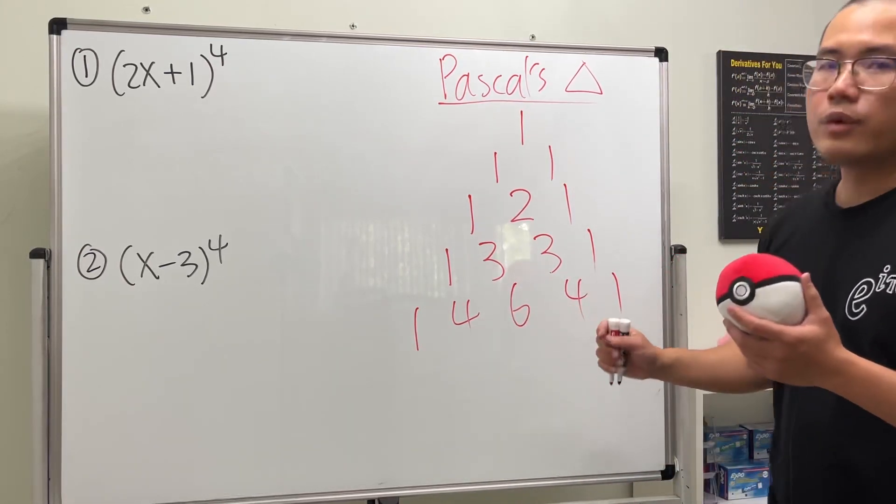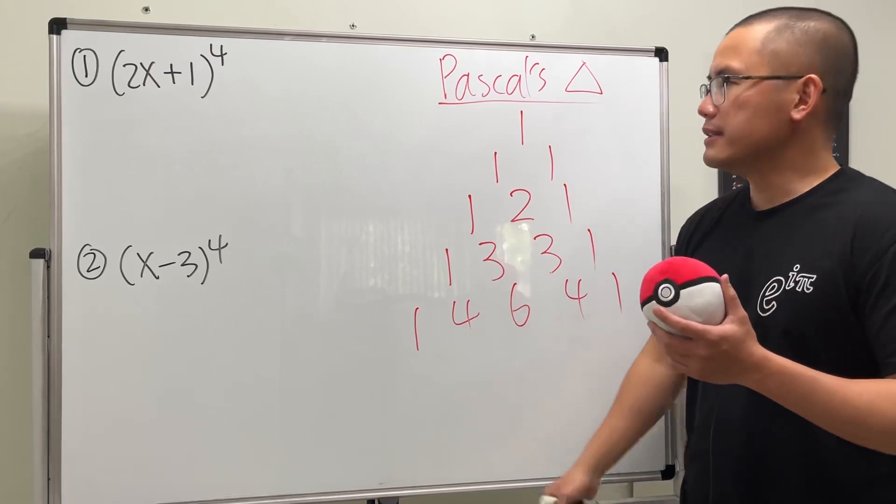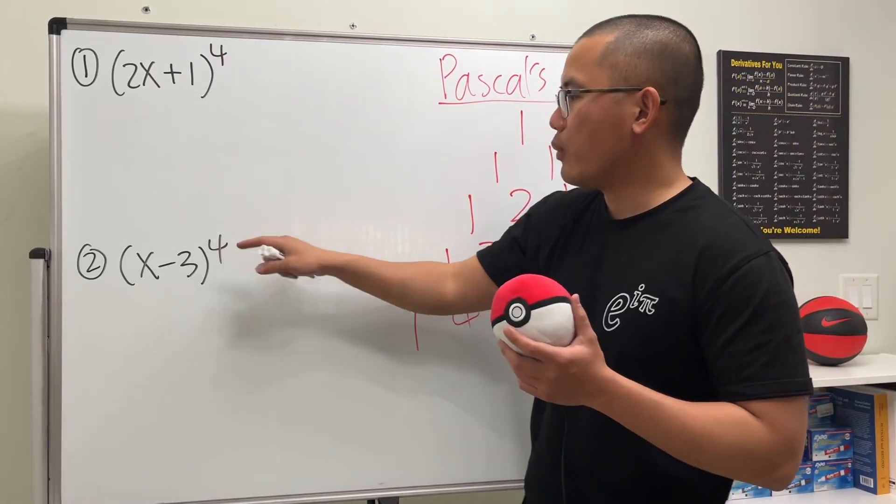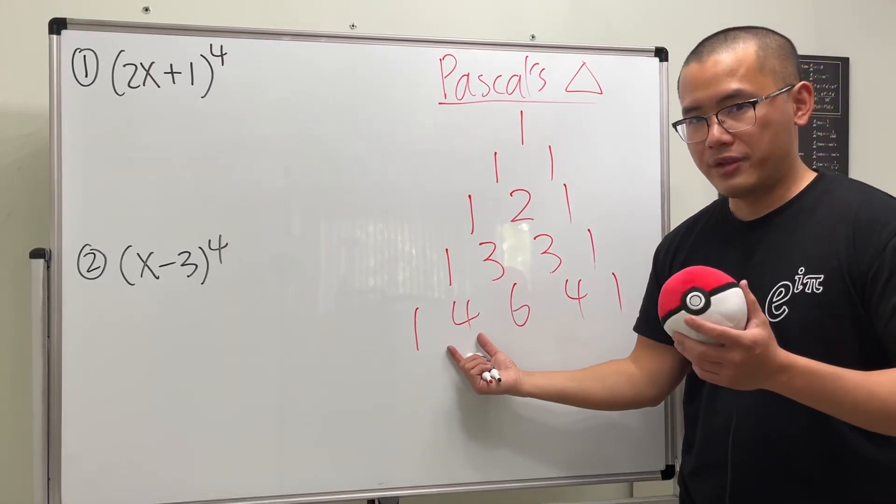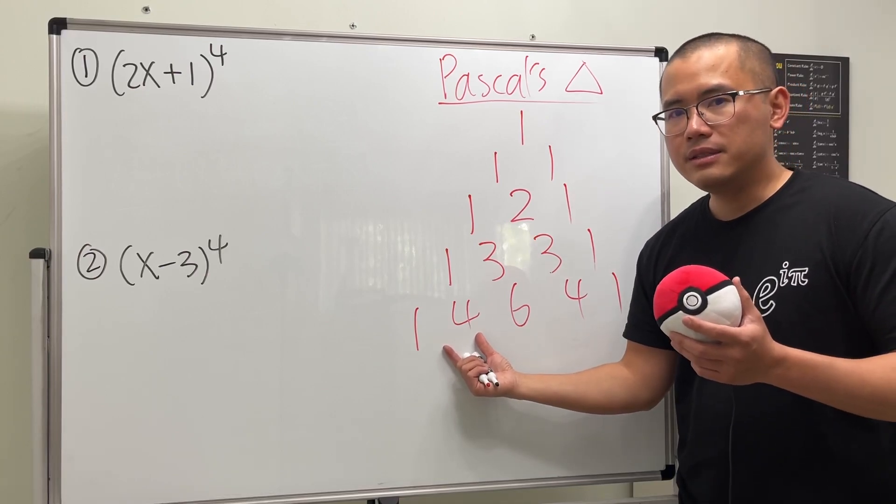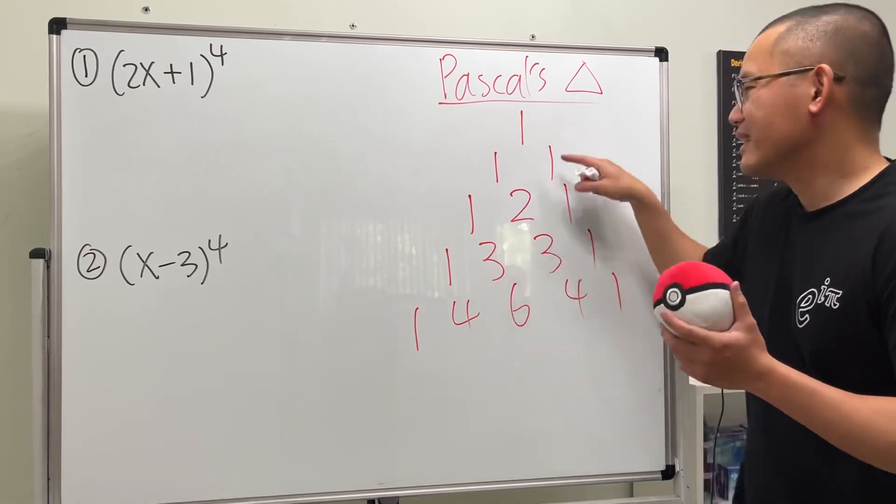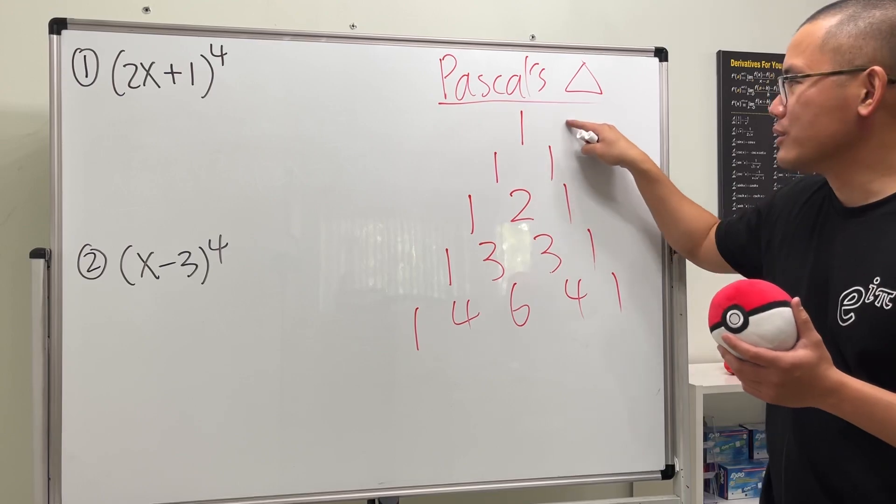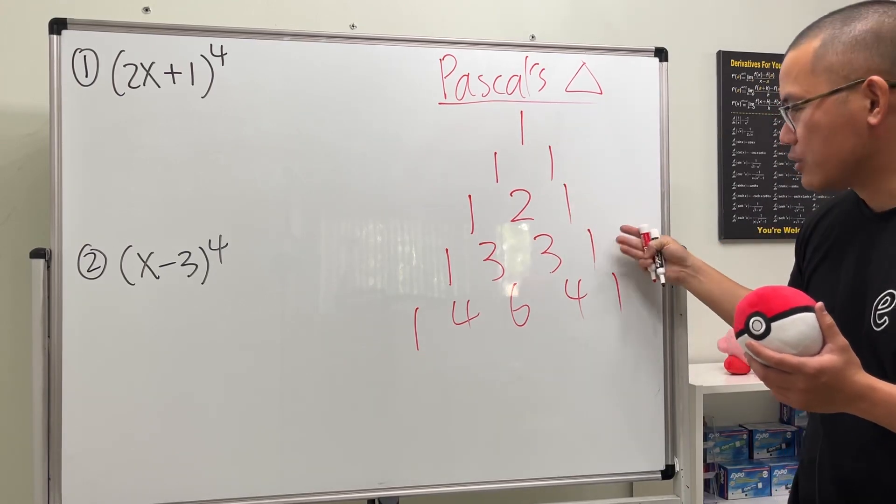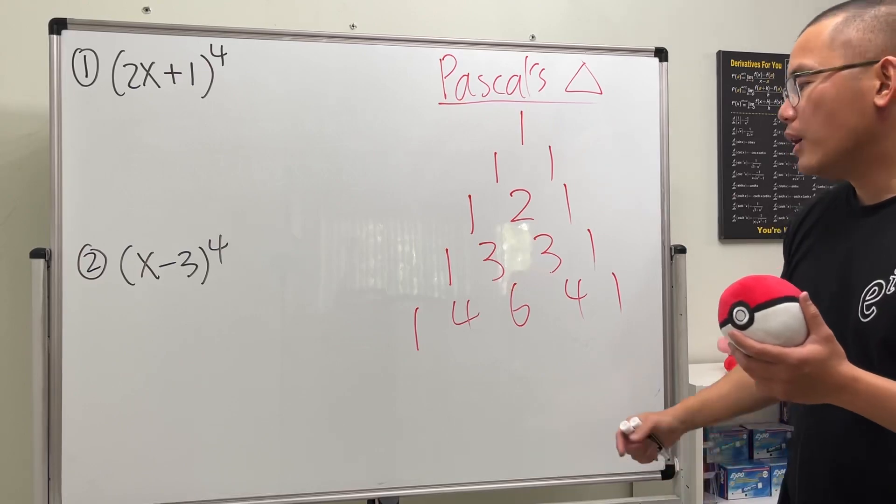We are going to use this row. And an easy way to remember it is because we are dealing with the fourth power, you want to see a four right here. And technically, this is the fourth row. Because the first one right here is the zero's row. And this is the first row. Second row. Third row. Fourth row.